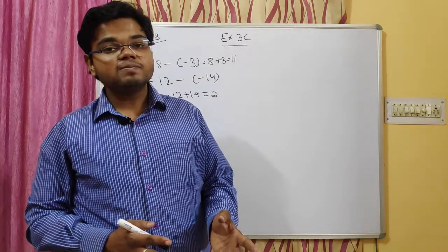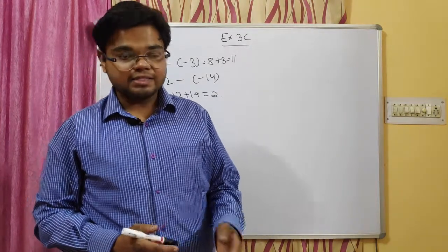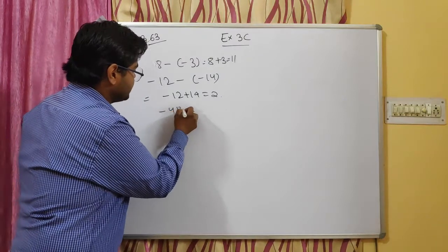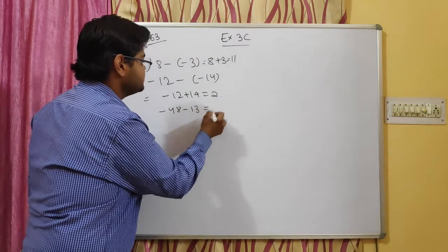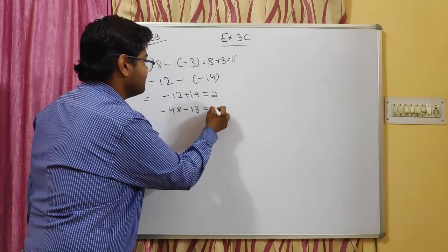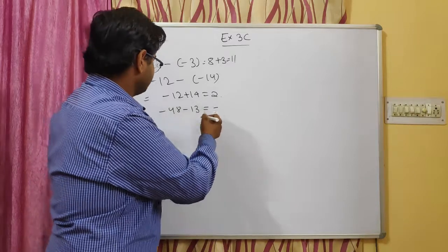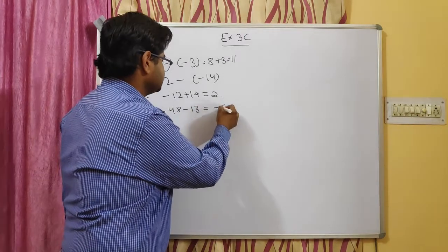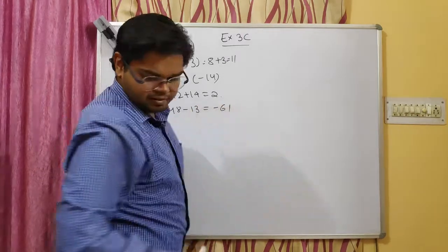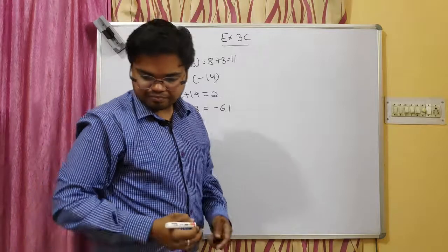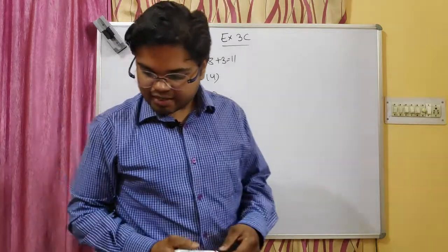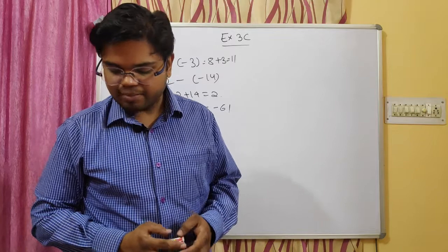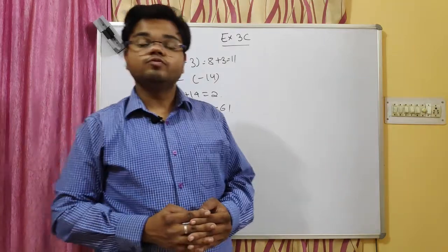Fourth part of question two: minus 48 minus plus 13. The minus plus is minus, so it becomes minus 48 minus 13, and the answer will be minus 61. Now question number three — subtract the following using a number line — but you won't be using a number line; you will simply subtract the integers.